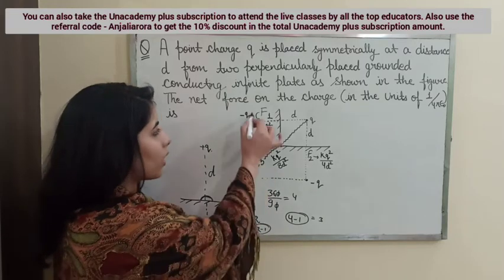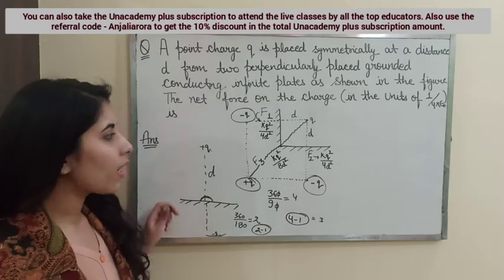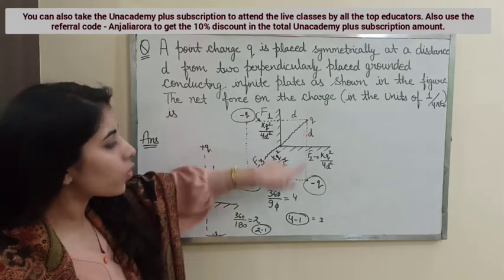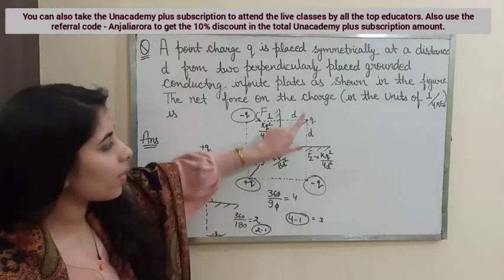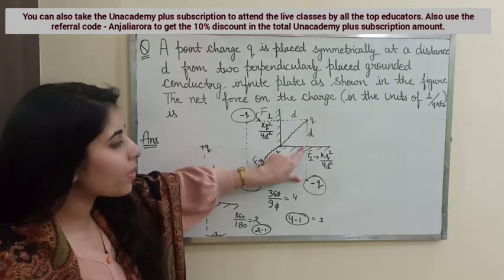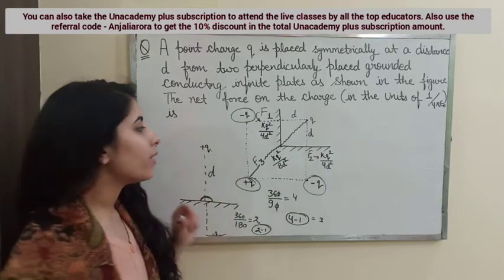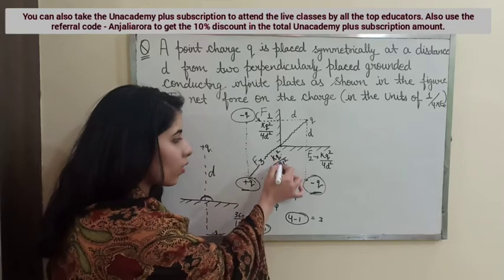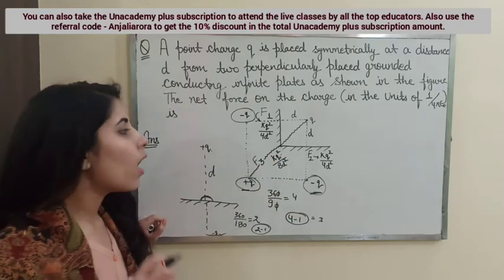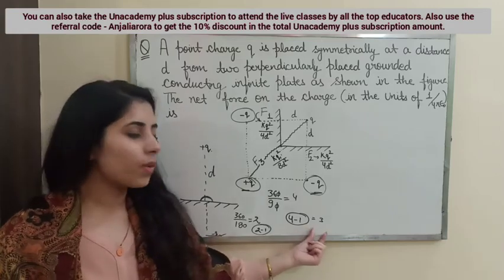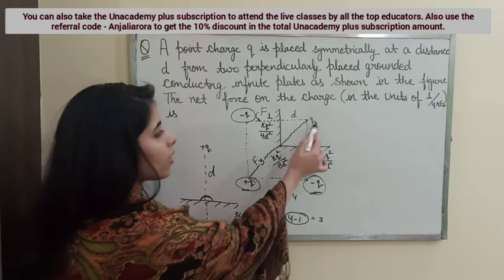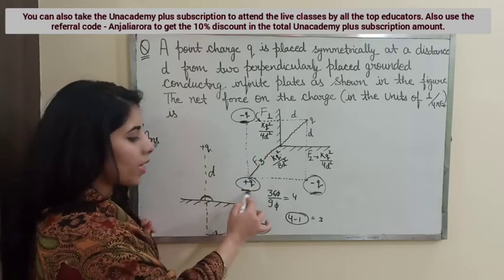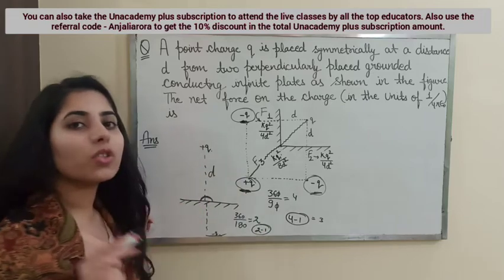In this case we are considering 3 image charges. The actual charge is plus Q. On the other side of one sheet, at the same distance D, we consider a charge minus Q. Then considering the image of that image charge gives us plus Q on the opposite side. So you can understand how the 3 image charges are positioned — one minus Q on one side, another minus Q on the other side, and a plus Q diagonally opposite.